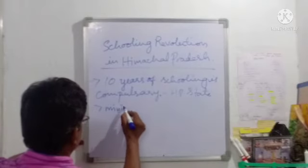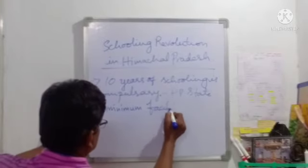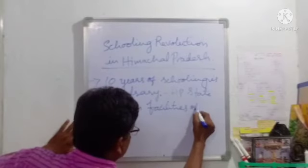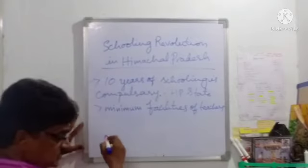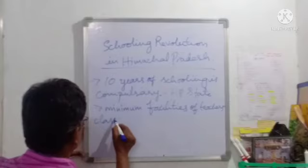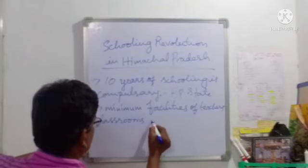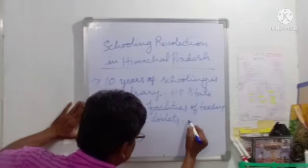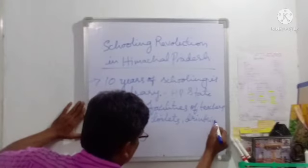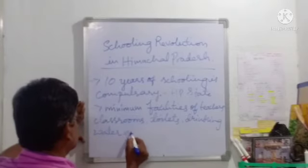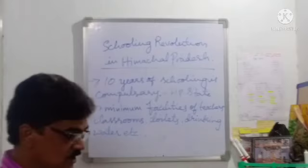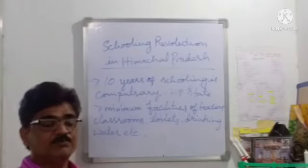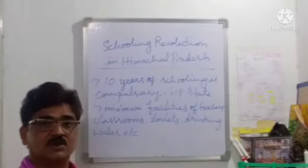Schools were provided with at least minimum facilities. These minimum facilities included: first, teachers; second, classrooms; third, toilets; and fourth, drinking water for the children. These facilities were improved and expanded year to year.